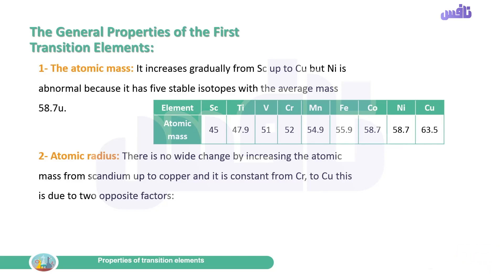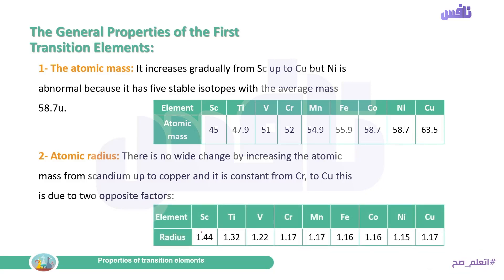The atomic radius is the distance between the nucleus and the outermost electrons in the atom. There is no wide change in atomic radius by increasing the atomic number from scandium up to copper, and it is relatively constant from chromium to copper. This is due to two opposite factors. The radius shows a slight decrease but not a wide change across the series.